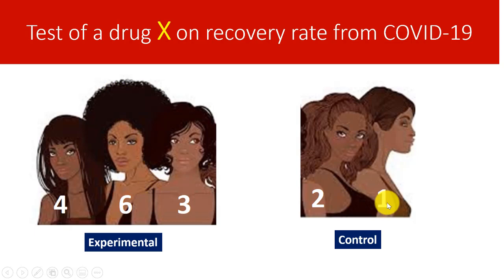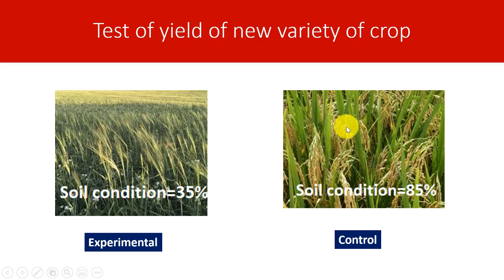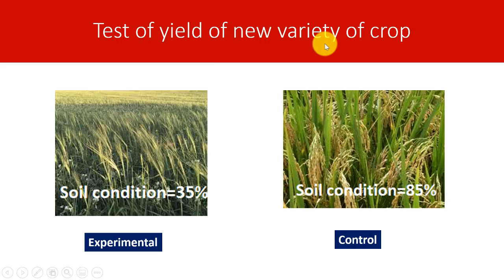Let's move to agriculture. Scientists wanted to find out and test the yield of a new variety of crop — planted in one area as control and another as experimental. At the end of harvest, the experimental crops did not grow as well as the control. You can't conclude the new crop variety is bad, because the soil condition under which the experimental crops grew had only 35% suitability, while the control soil had 85% suitability.